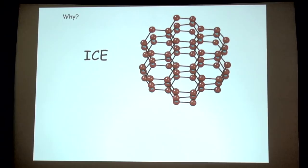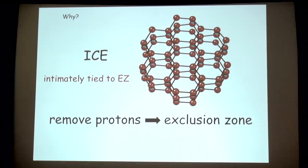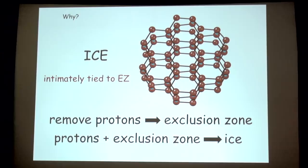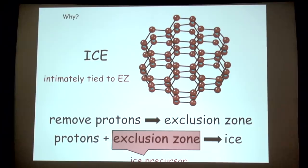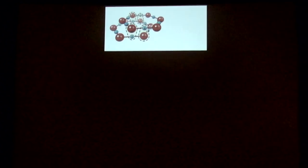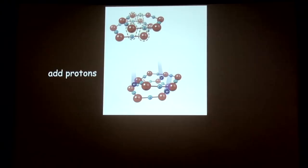The ice structure is very closely tied to the EZ structure — you just pull out the protons from ice and you get the exclusion zone. These two structures are very close together. The implication is that if you want to get ice, you start with the exclusion zone and re-add the protons. So this is a reversible situation. The exclusion zone looks like a possible precursor of ice — to get to ice, you go from bulk water to EZ water and then to ice, because those two structures are so similar.